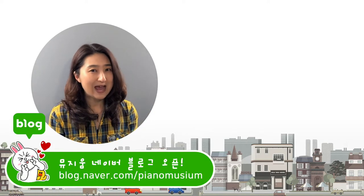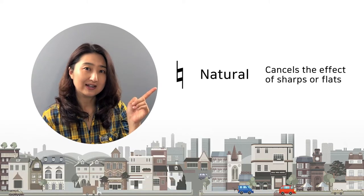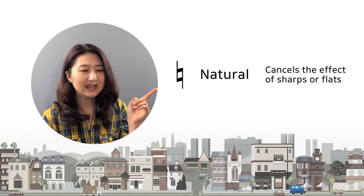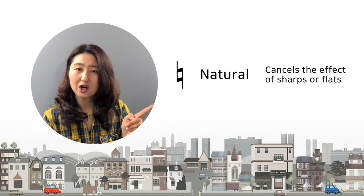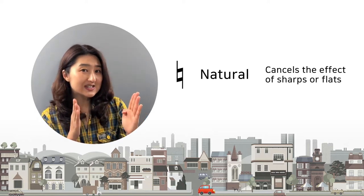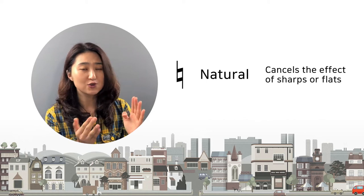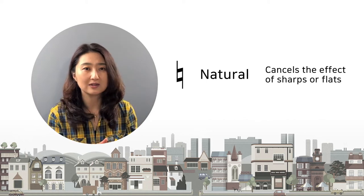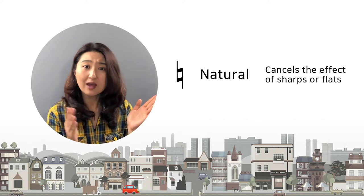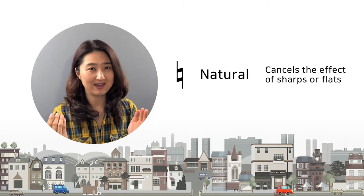Now the last one: natural. If you see this sign, it means cancel the previous effect of sharps or flats. So right after a sharp, if you see a natural sign, it cancels the sharp — you just play the note as written, nothing extra on it. A natural after a flat cancels the flat too. It's like erasing everything.